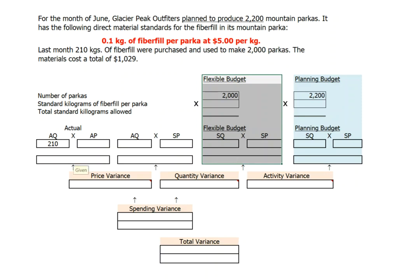The materials cost $1,029. Let's begin by calculating our total overall variance. To do that, we need to complete our planning budget. Again, we originally planned to produce 2,200 parkas, and we have a standard of one-tenth of a kilogram of fiberfill per parka, which means we would have expected to use 220 kilograms of fiberfill. So we're going to take our standard quantity of 220 kilograms of fiberfill, multiply it by our $5 per kilogram standard price to get an original planning budget of $1,100 for direct material cost. We actually end up spending $1,029 for fiberfill, which gives us a $71 total variance. And in this case, the variance is favorable since we spent less on fiberfill than we originally planned.